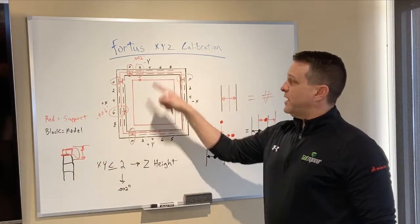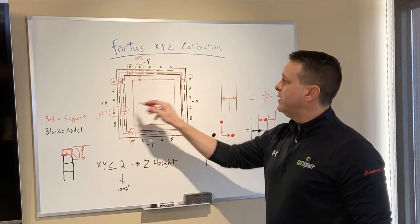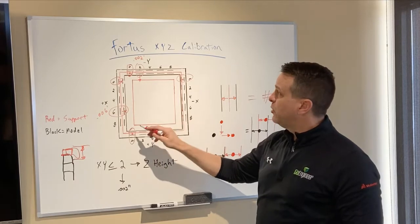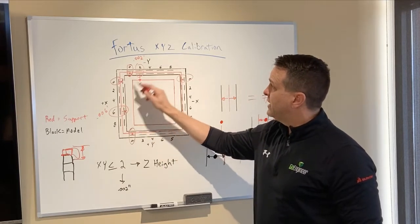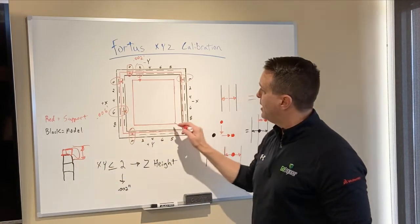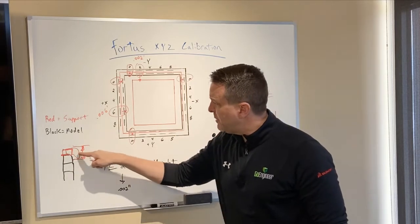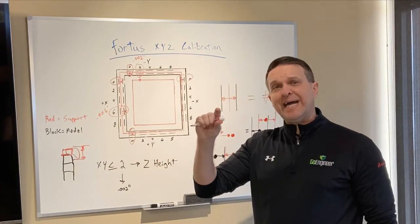So this is a Fortis XYZ calibration. I'm dialing in 1Y, 1X to get 2,0 and once I get underneath the 2 or the 2,000s, I can then come in and check my center square by removing just the top layer of that support material and measuring it to get my Z height.